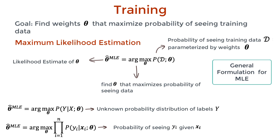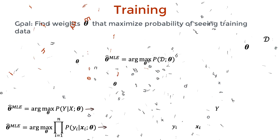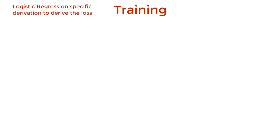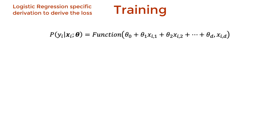Remember, the goal is training, and for training we need some loss function to minimize. Let's derive this loss function. From here, the derivation gets specific to logistic regression. We make the assumption that the unknown probability distribution of labels y can be approximated with a linear combination of features and weights. I'll rewrite it in vector form — when I say vector form, I'm making the symbols bold to indicate vectors as opposed to scalars. So x_i and theta are two vectors, whereas y_i is a scalar.